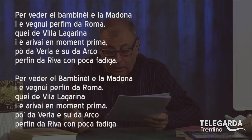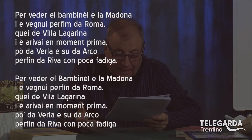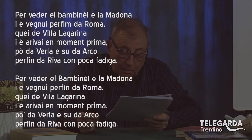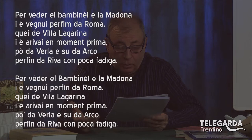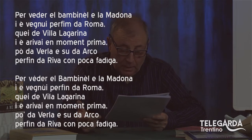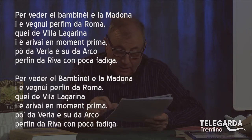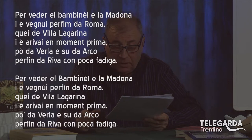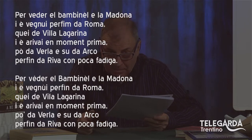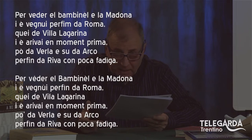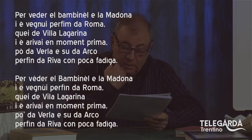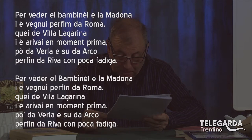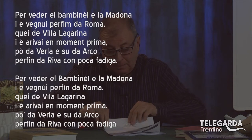'Quei de vila' - anche qui la forma dialettale con un L. 'Vila la garina, gli è arrivai in moment prima.' 'Per fin, po'' - qui c'è l'accento su 'po'', invece ci va l'apostrofo perché sta per 'poi'. 'Po' d'averla e su d'arco, per fin' - bisogna decidere: o 'per fim' con l'M di Mantova, o 'per fin' con l'N di Napoli. In questo caso ho preferito l'N di Napoli, quindi 'per fin da arriva, con poca fadiga.' Questa è la prima parte.